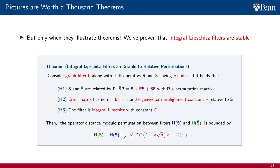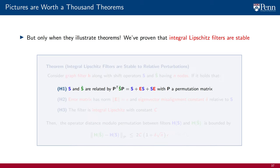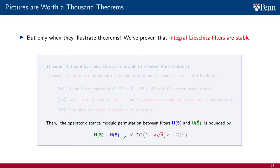We have proven that integral Lipschitz filters are stable. In this theorem, we consider relative perturbations of the shift operator and restrict the filters to be integral Lipschitz. If these conditions are satisfied, the filters are proven stable modulo permutation with respect to the norm of the perturbation.